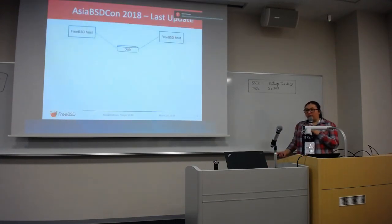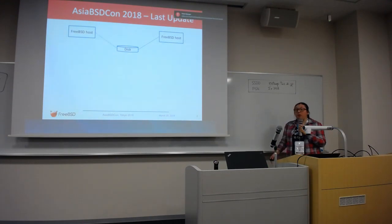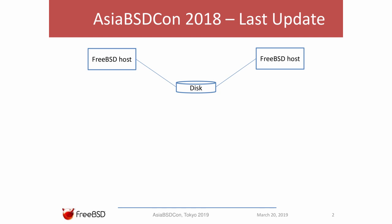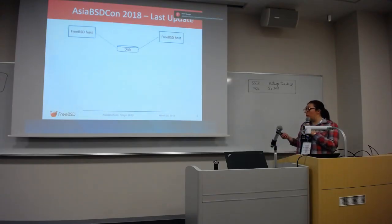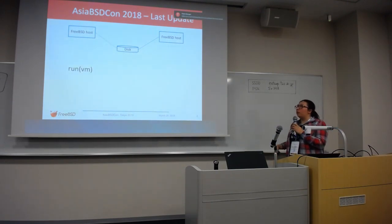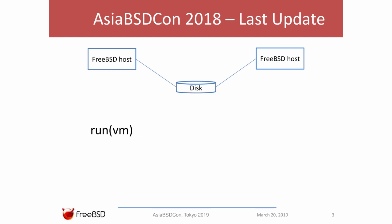I would like to present all the work I was doing in the last year. In the last AsiaBSDCon, I was in the state when we had two identical hosts that would share the same disk. What was the first point for the migration? We would run a virtual machine on one of the hosts, suspend its state on the disk, and then restore the other host.